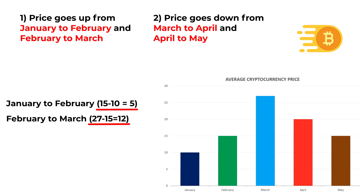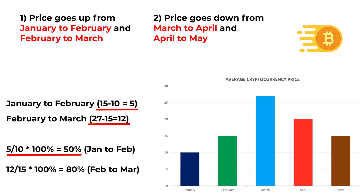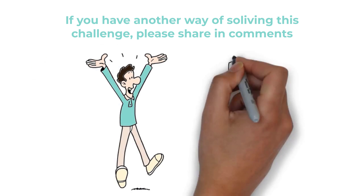Between January and February, price increased by 50%, calculated by dividing 5 by 10 and multiplying by 100%. Between February and March, price increased by 80%, calculated by dividing 12 by 15 and multiplying by 100%. The end result is 80%, so the correct choice is choice C: 80%. Hopefully you've nailed this question and now know how to answer similar problems on the test.